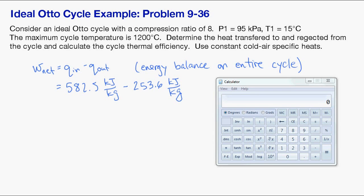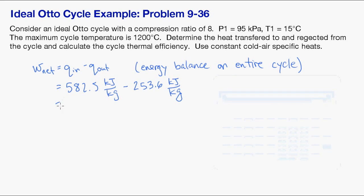and let's pull up our calculator. We enter them in, and we end up with 328.9. And that's kJ per kilogram.